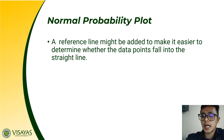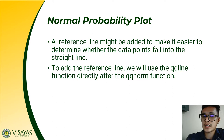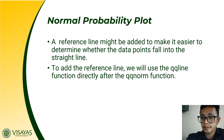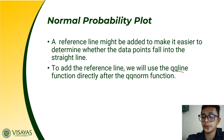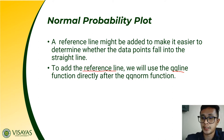A reference line may also be added to make it easier to determine whether data points fall on the straight line — similar to the curve line added to the histogram. To add a reference line to the normal probability plot, we use the qqline function. So: qqnorm to create the normal probability plot, and qqline to add the reference line.